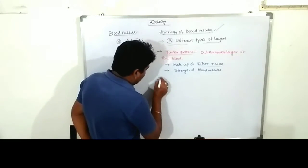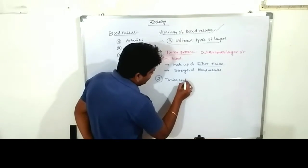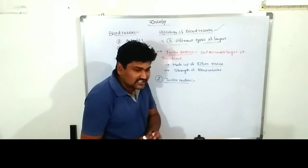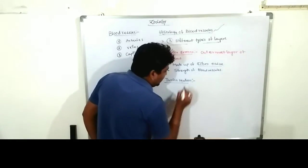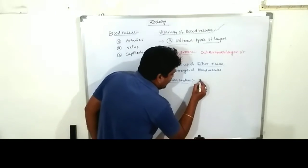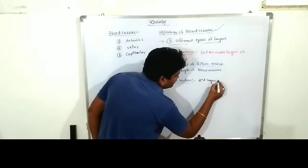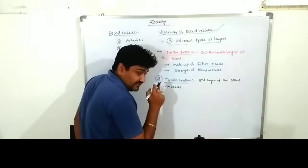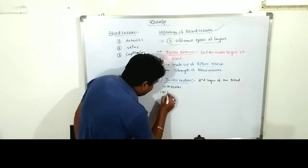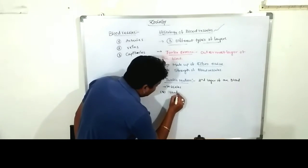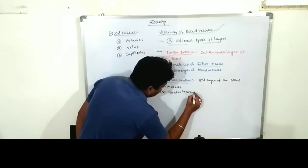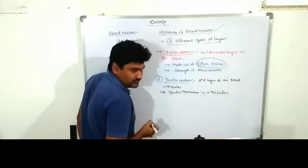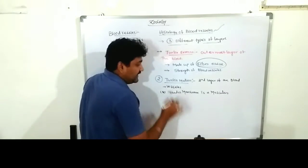The second layer is known as tunica media. Tunica media is the middle layer of the blood vessel, located in between the external and internal regions. Tunica media is made up of muscular tissue, whereas tunica externa is made up of fibrous tissue.